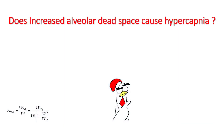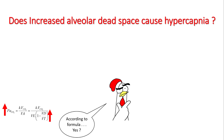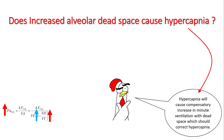The question we asked in the previous lecture was: does increased alveolar dead space cause hypercapnia? If we look at the formula, PaCO2 is inversely proportional to minute ventilation multiplied by one minus dead space ventilation. So if your VD/VT ratio increases, your denominator becomes smaller and your PaCO2 increases.